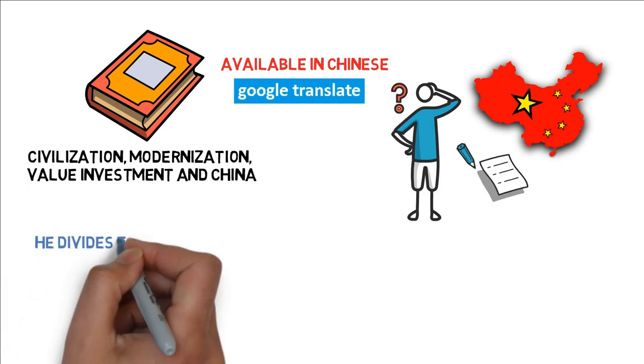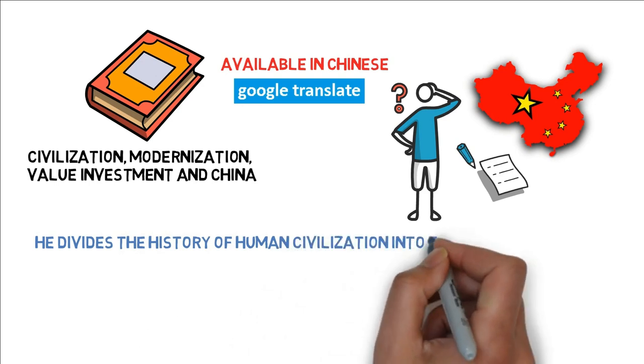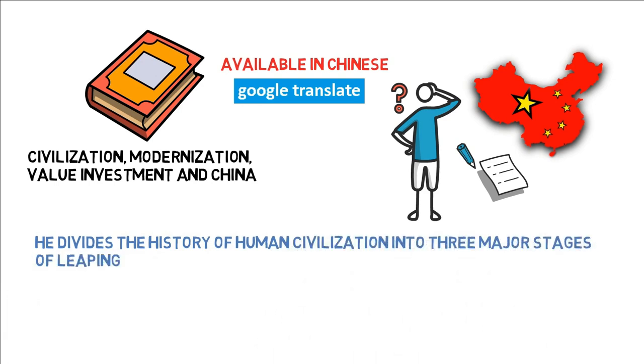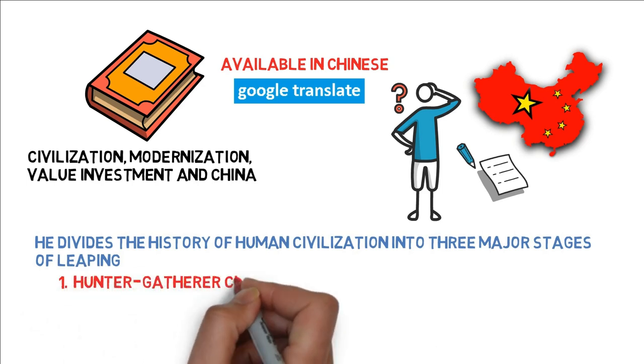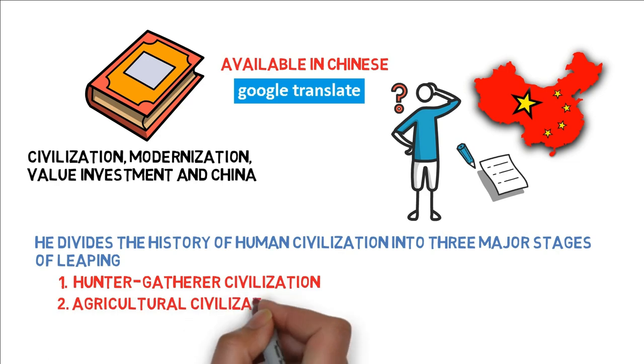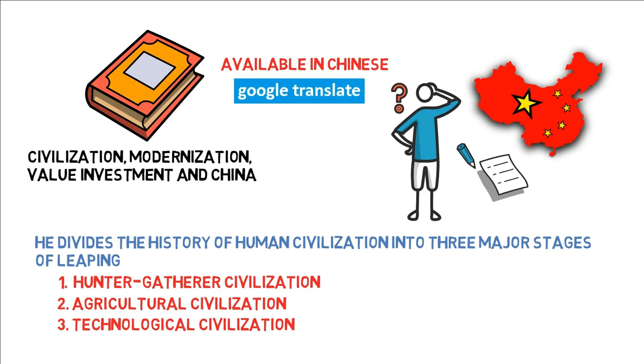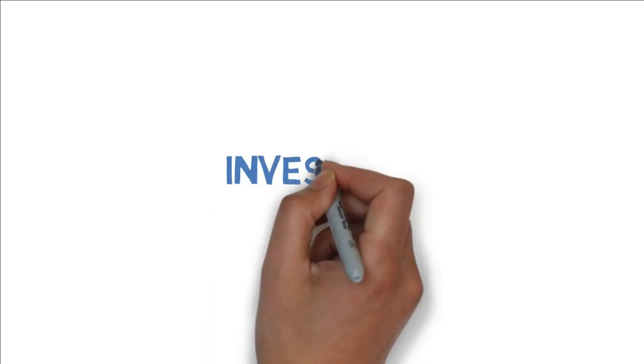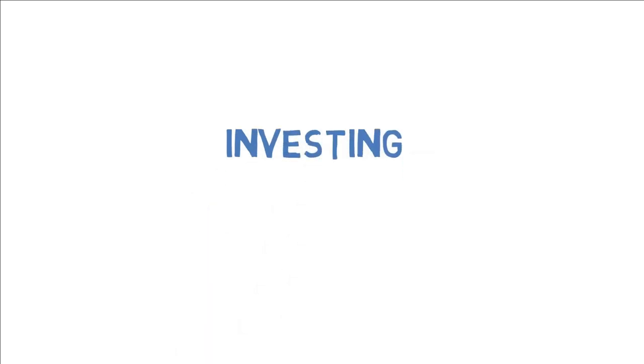In the first half of the book, he divides the history of human civilization into three major stages of leaping: 1.0 hunter-gatherer civilization, 2.0 agricultural civilization, and 3.0 technological civilization, which is a fantastic read. But in this video, however, I will cover the second half of the book, which is more geared towards Li Lu's thoughts on investing.